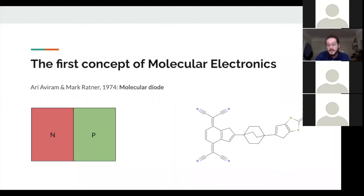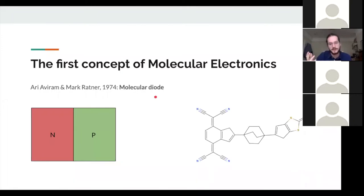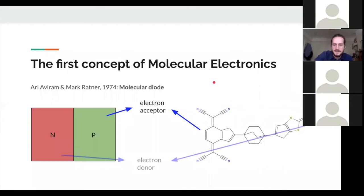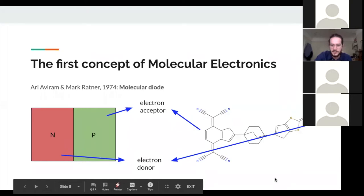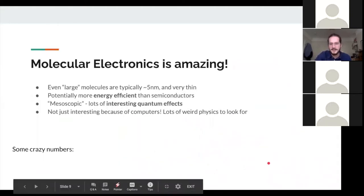So why would we want to do this? The first concept of it is almost 50 years old now. Avram and Ratner pointed out that this molecule on the right-hand side should behave exactly the same way as an NP junction because this P-type section and this section with the nitrogen on it can both accept extra electrons. And this section with the sulfur and this N-type doping can donate electrons. This turns out to be exactly what we need. And so every single thing that we'd want to do with electronics and semiconductors, we could do with single molecules in principle. This is actually amazing.